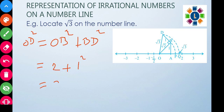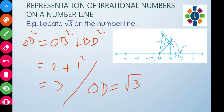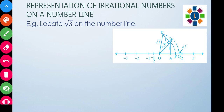Therefore OD equals root three. Using a compass at O with radius OD, we draw an arc on the number line. The point Q where this arc meets the number line represents root three on the number line.